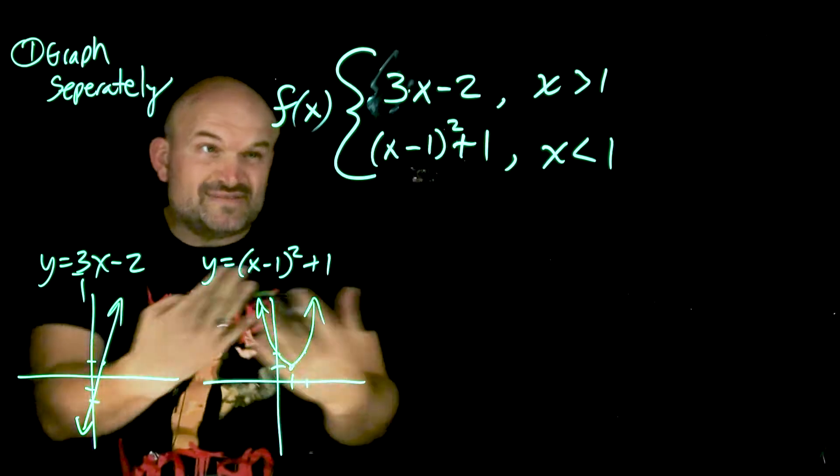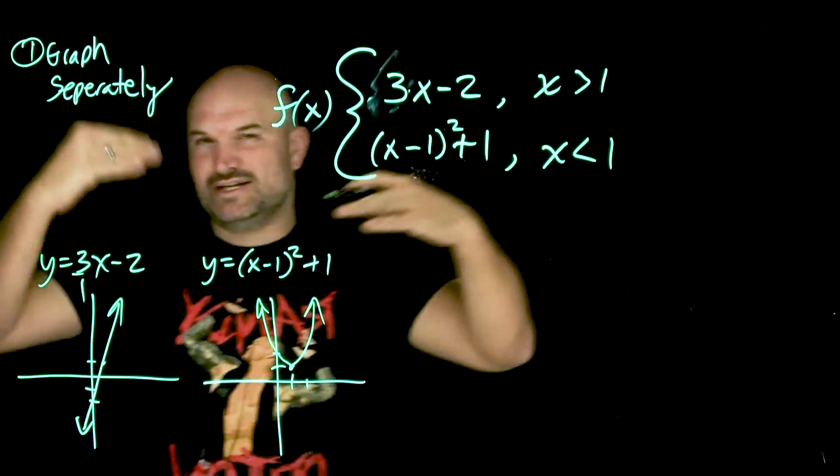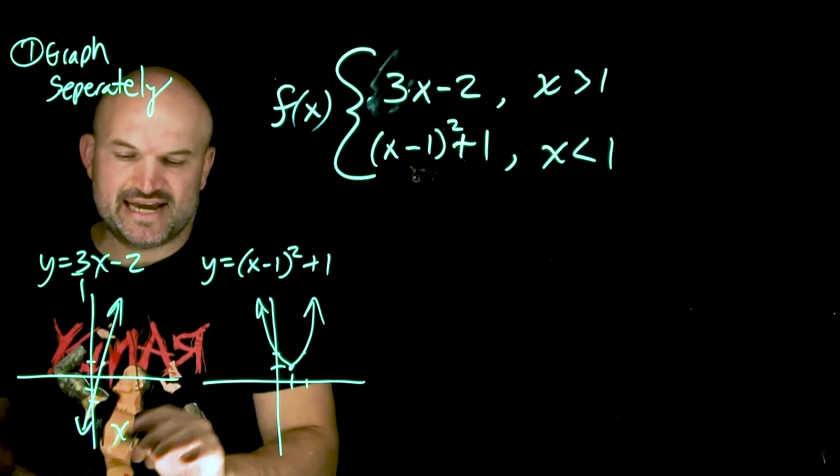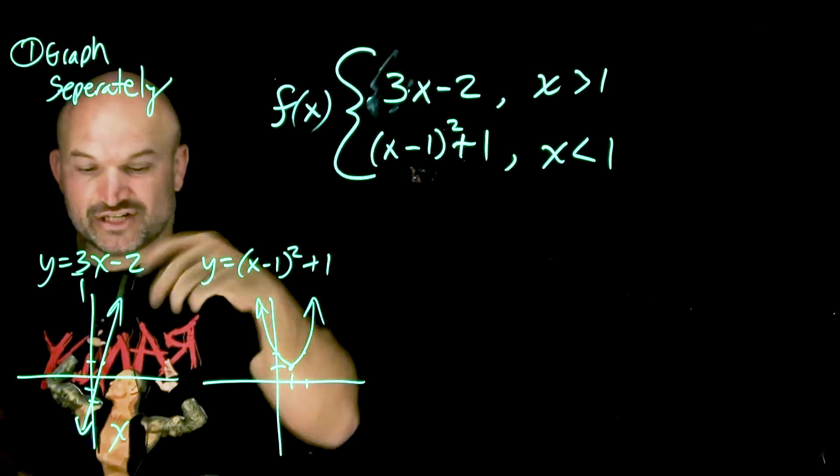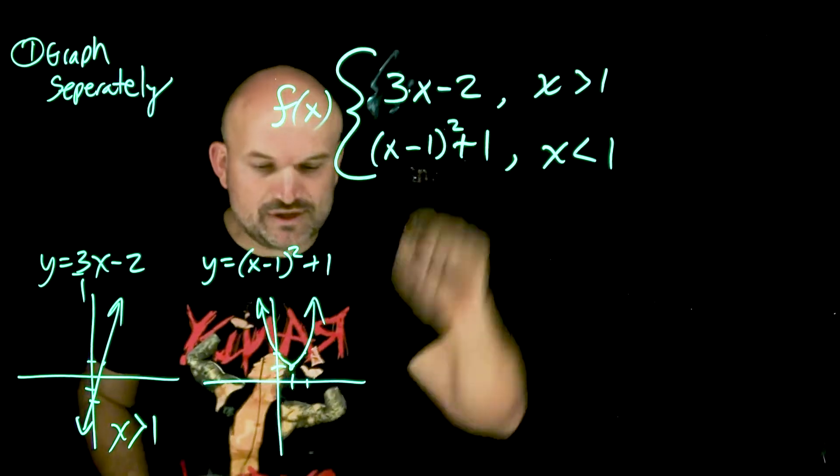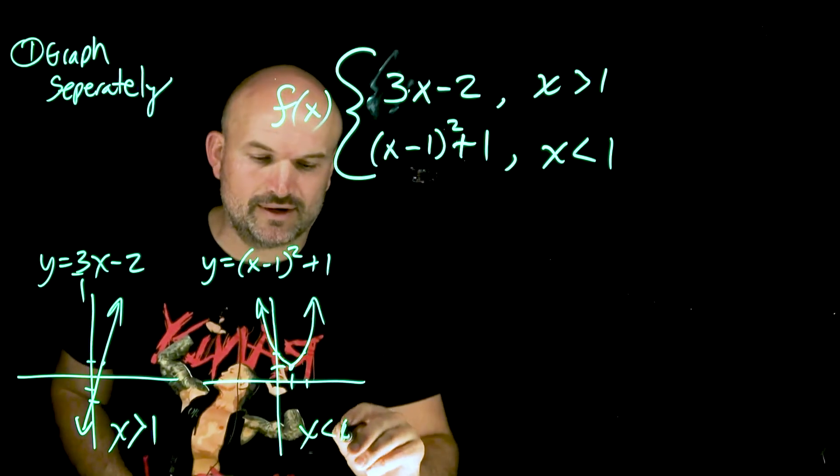Okay, so now that we've done all of this separately, rather than trying to do everything together, what we can do now is go ahead and apply our domain restrictions. So this is saying this graph, or this equation, is only true for x values greater than 1, and this one is only true for x values less than 1.